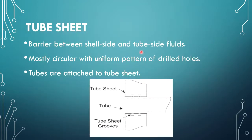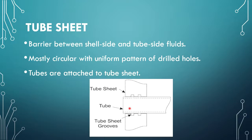The next part is the tube sheet. The tube sheet is one of the main important parts of the shell and tube heat exchanger and is also the costlier part. The tube sheet acts as a barrier between the shell side and tube side fluids. It is mostly circular with a uniform pattern of drilled holes, and the tubes are attached to the tube sheet. This image shows how tubes are welded to the tube sheet.